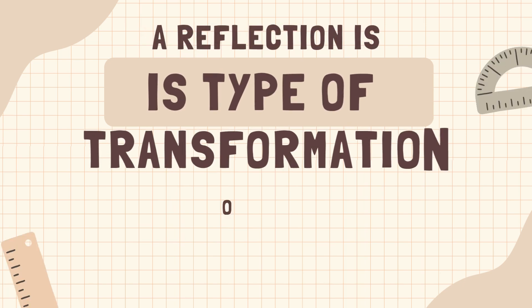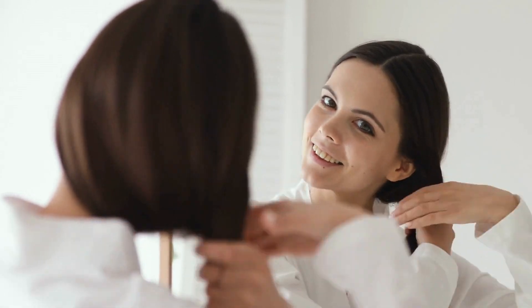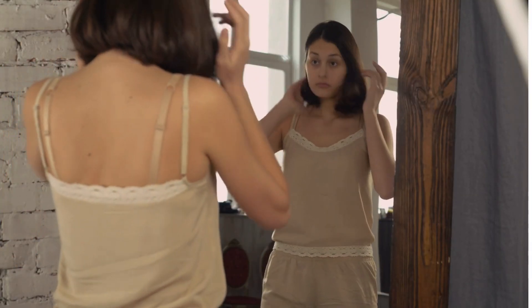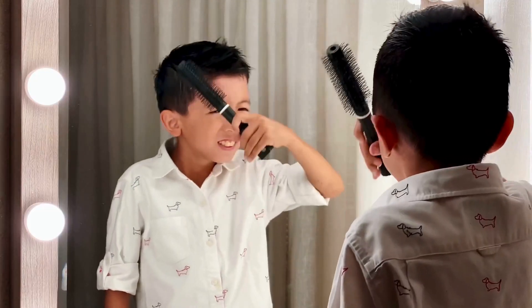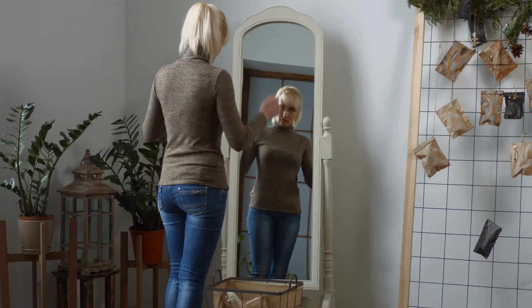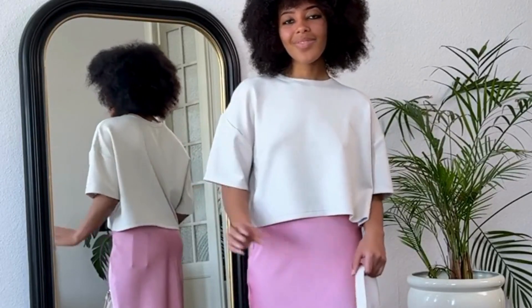Reflection is a type of movement or change in a geometric shape. Think about when you look in a mirror. You see an image or reflection of yourself. Notice your reflection appears to be the same distance from the mirror as you are. Notice also that your left and right sides are reversed.